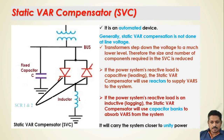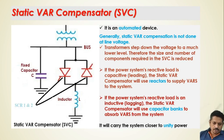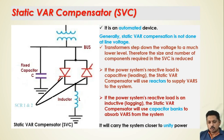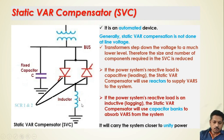Generally, a static VAR compensator is not operated at line voltage because it requires very high capacity switching devices, and high-capacity electronic devices are very costly. So we reduce the voltage to a usable form with a transformer, then use an SCR bank for switching purposes.